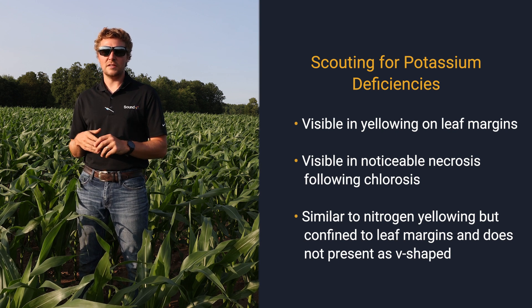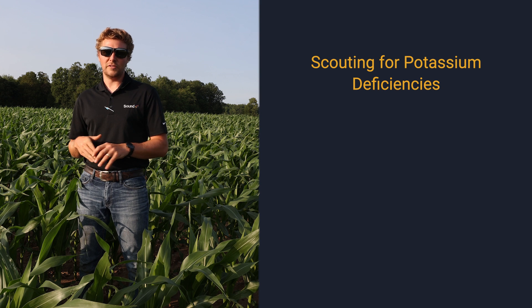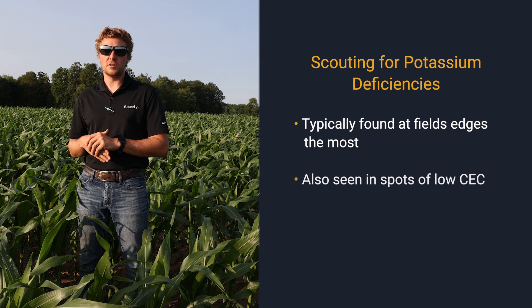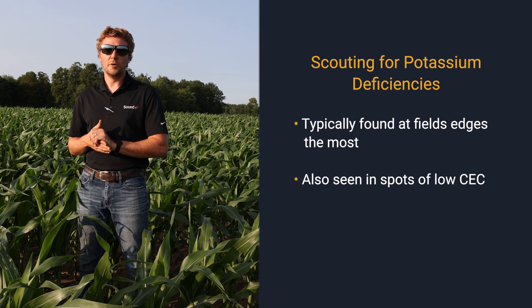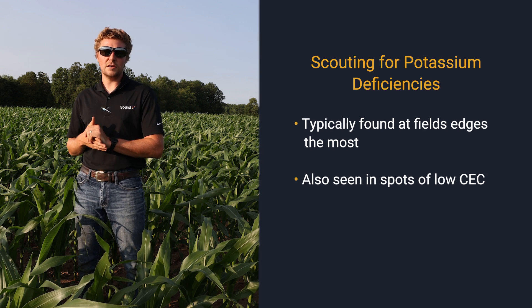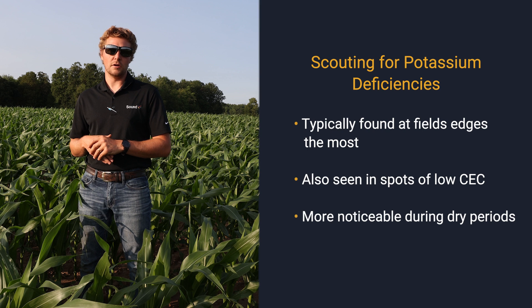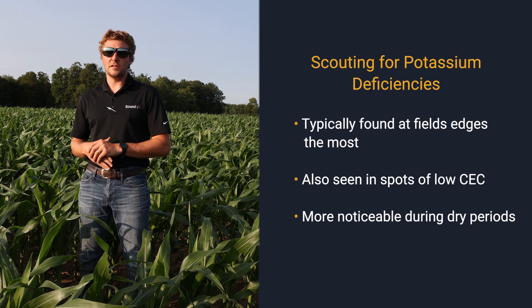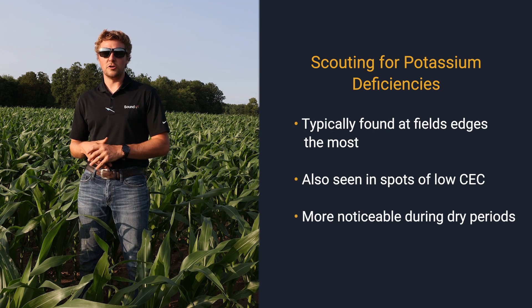Oftentimes when we see potassium deficiency, field edges typically have it the worst, but there are also low CEC spots and fields that are low in soil test potassium that can definitely show potassium deficiency, as well as when we get into dry periods of the year. A lot of times we find it during dry times because potassium is taken up by diffusion.